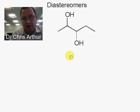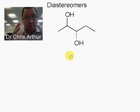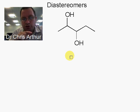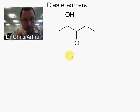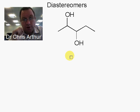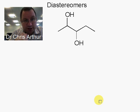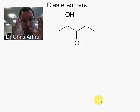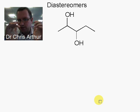You've also met the idea of chiral molecules, which are molecules that are non-superimposable mirror images of one another. Now, I want to introduce you to a third concept to go along with these, and that's the idea of a diastereomer. A diastereomer is a compound which is a stereoisomer, but which is not an enantiomer. Remember that enantiomers are when we have two non-superimposable mirror images — a left hand and a right hand are enantiomers.